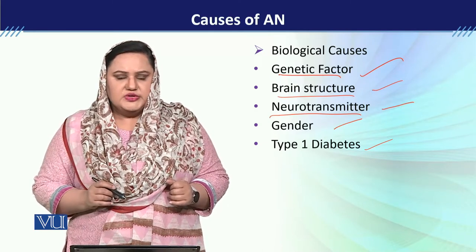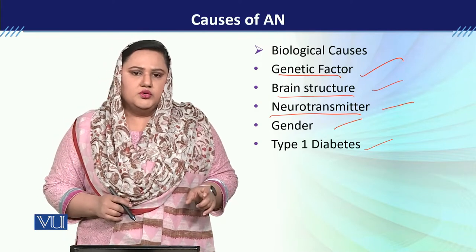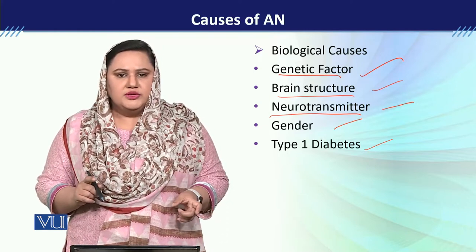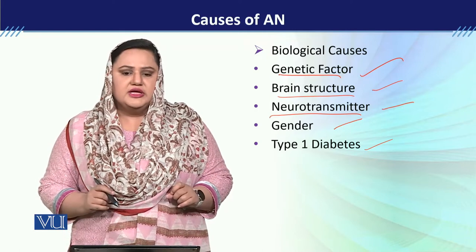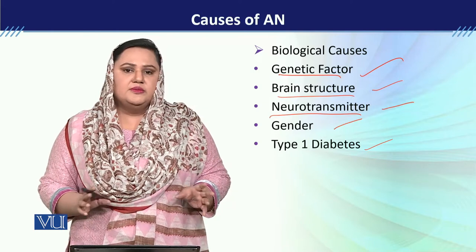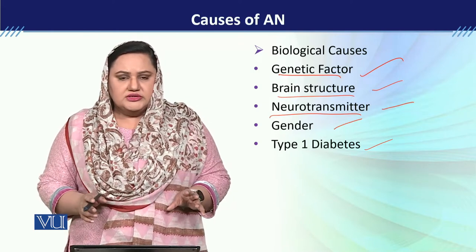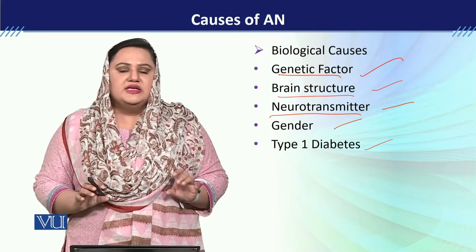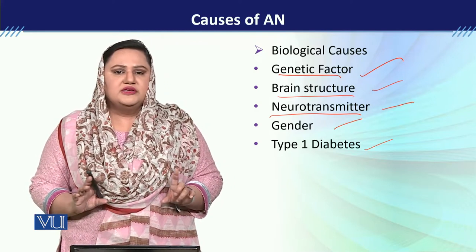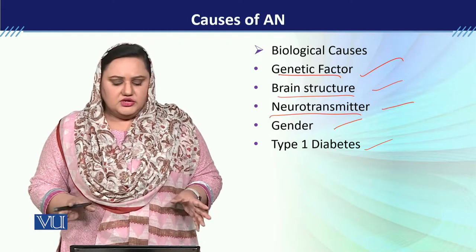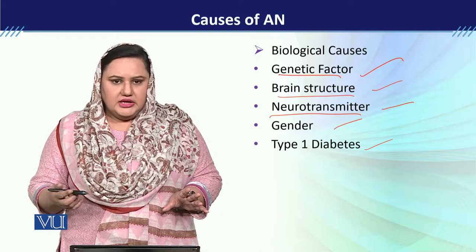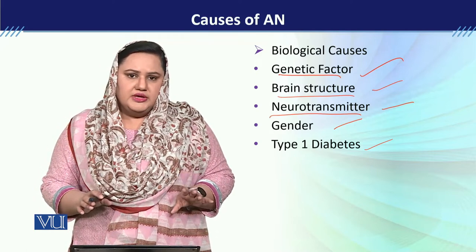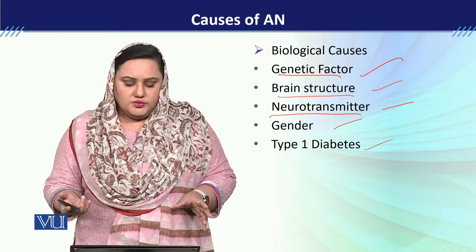Then we will talk about neurotransmitters. In neurotransmitters, the serotonin level is low in these individuals. We know that serotonin regulates emotions and appetite, and also regulates levels of norepinephrine and dopamine. It is possible that anorexia nervosa patients have low serotonin levels. This is also suggested because when antidepressants are given to them, their response to medication is better, weight loss shows improvement, and their mood also improves.